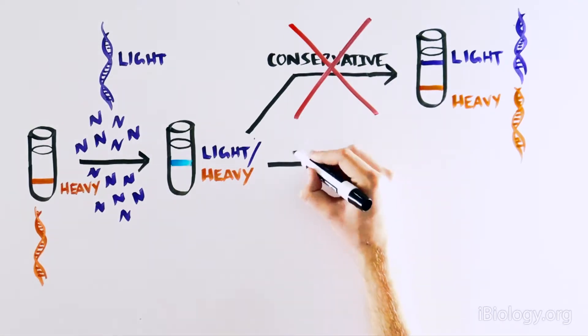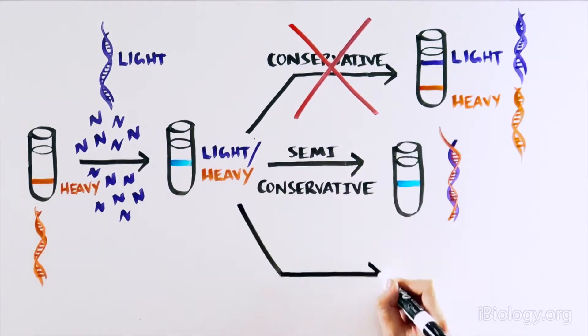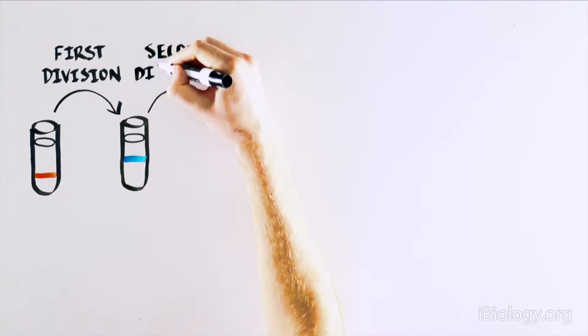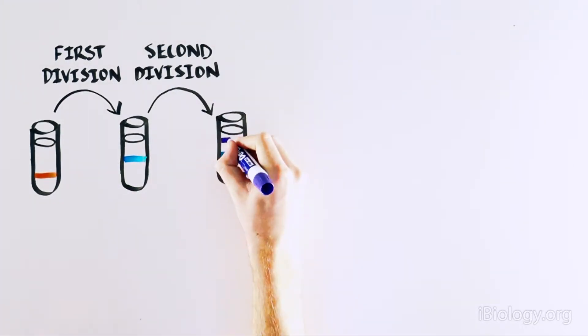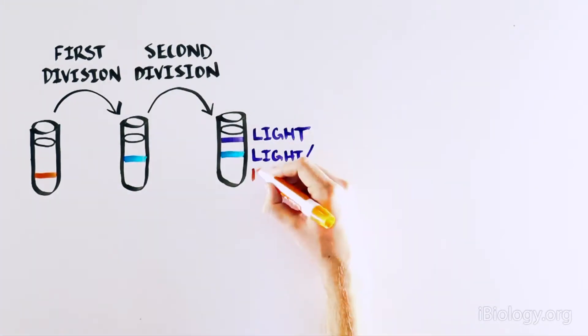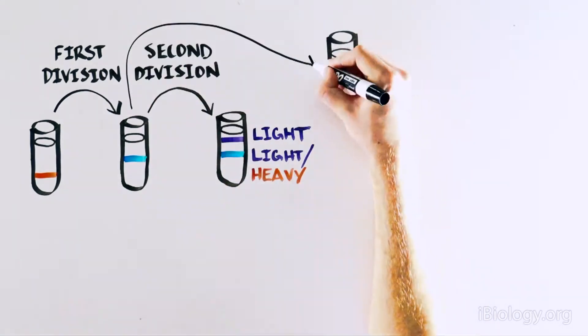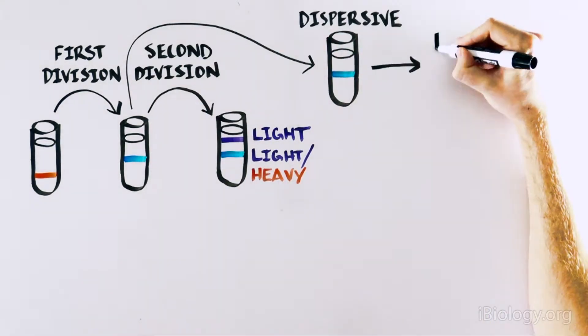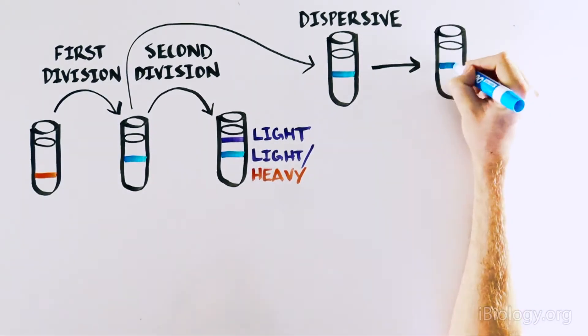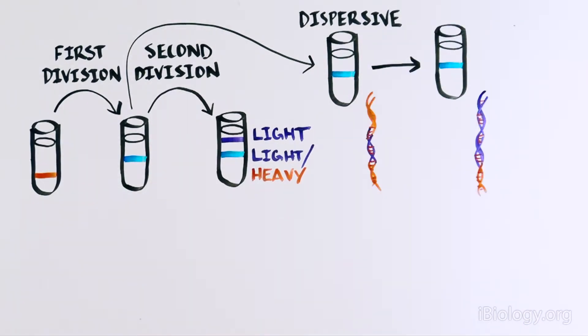However, this is in line with the semi-conservative or the dispersive model. After two cell divisions, the DNA molecule was now either half heavy and half light, or entirely light. So this is now not in line with the dispersive model, which would predict that the DNA after two cell divisions would contain a mixture of heavy and light DNA.